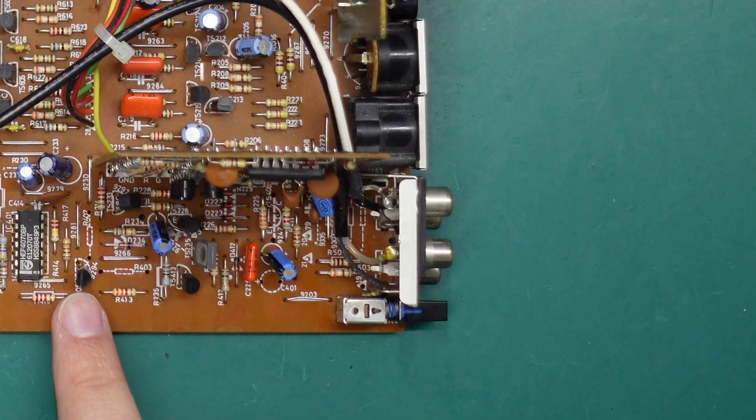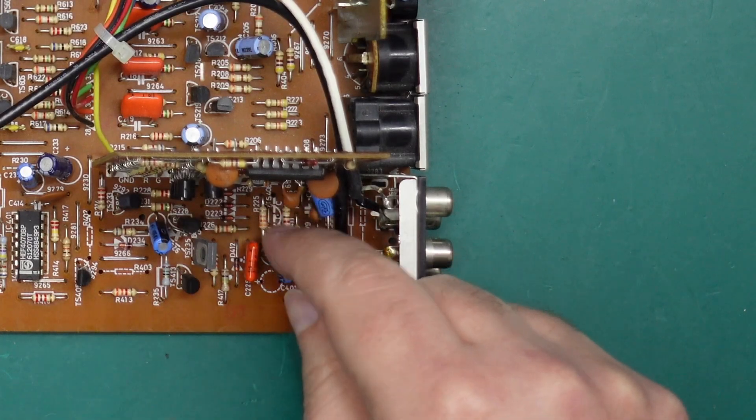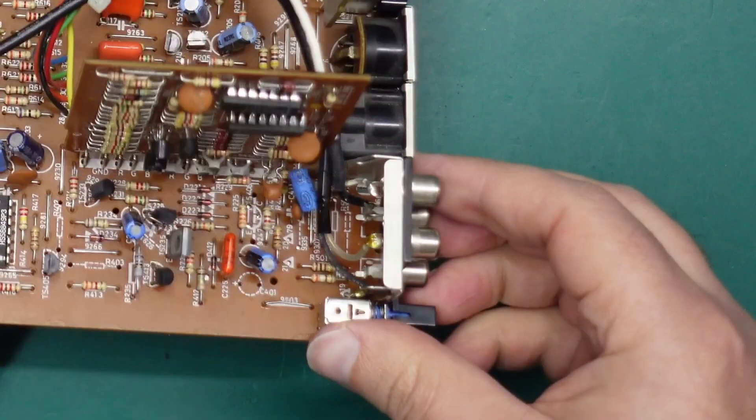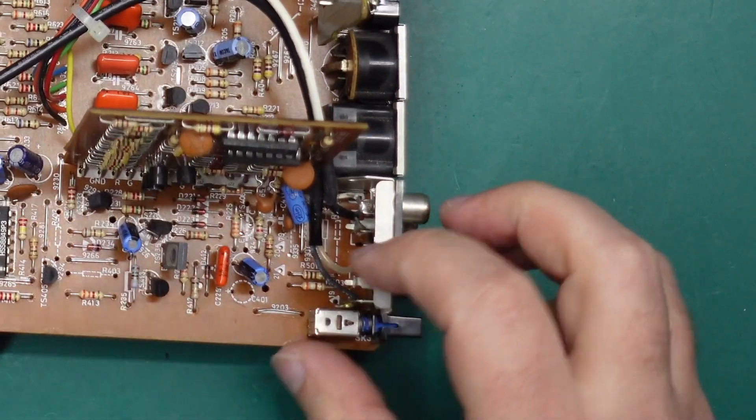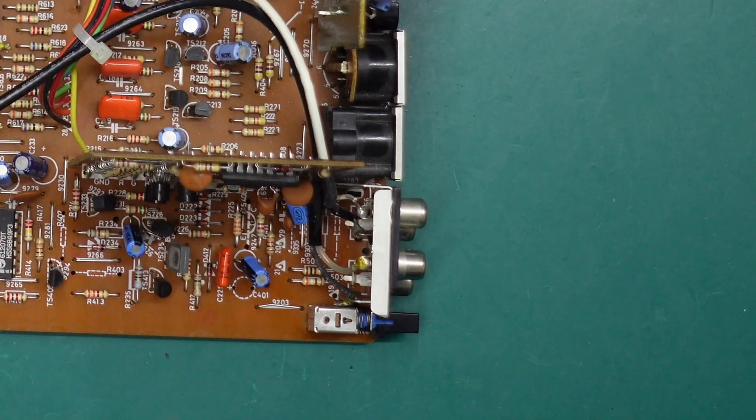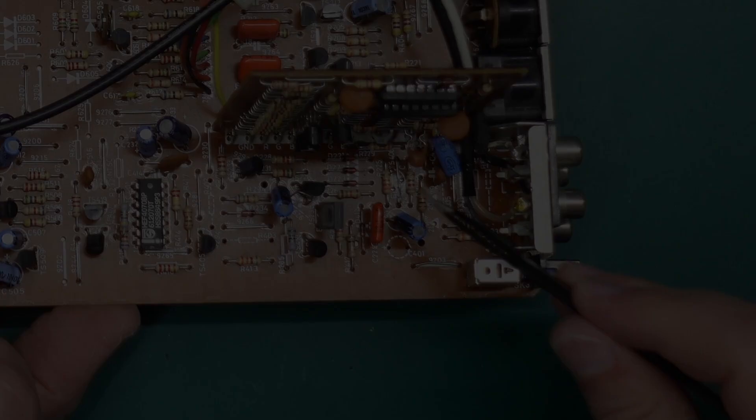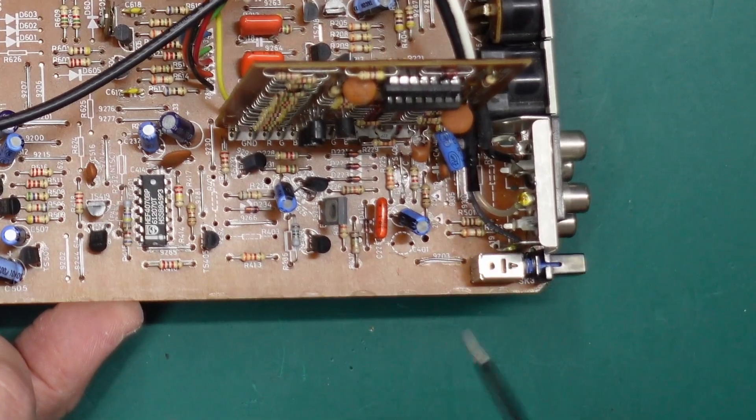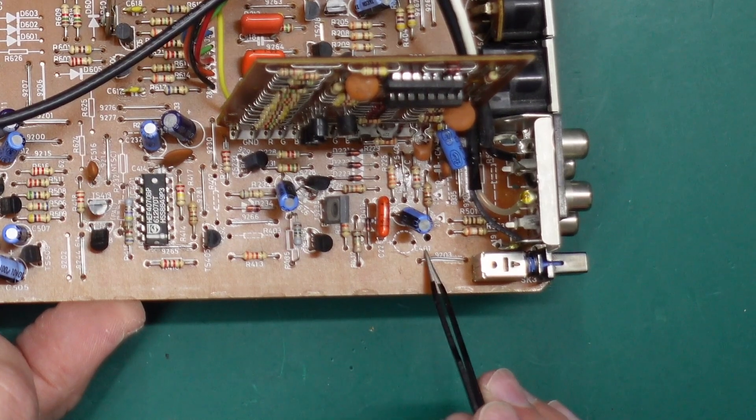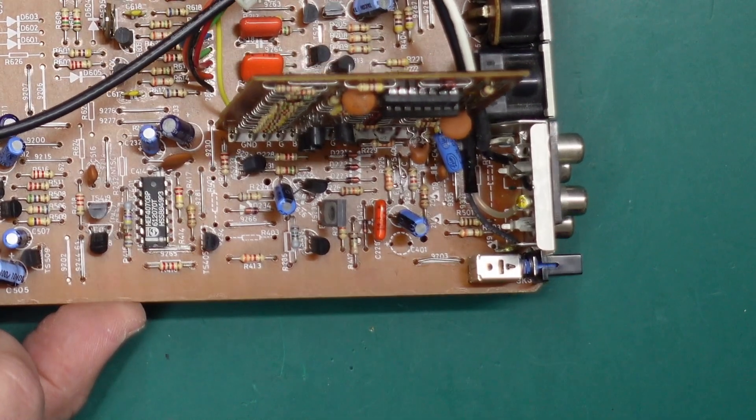Cool so with that transistor now moved out of the way you'll notice that there is a little jumper link under where that transistor was labeled 9247 we need to install the jumper wire there. All right our jumper link is in.